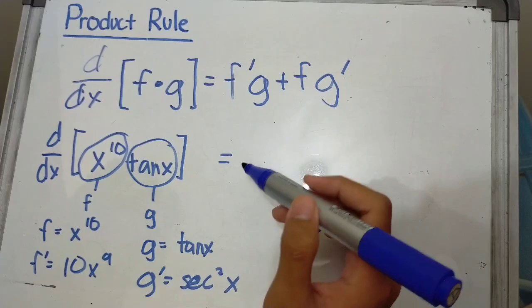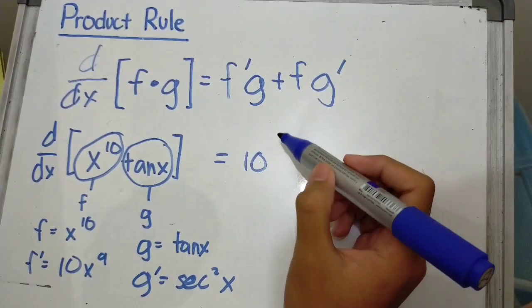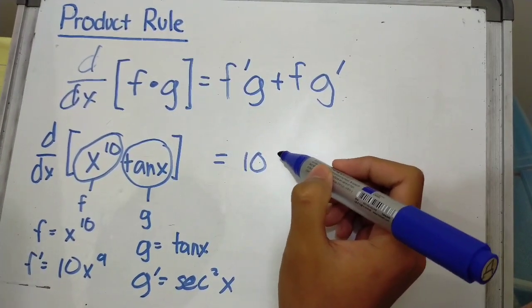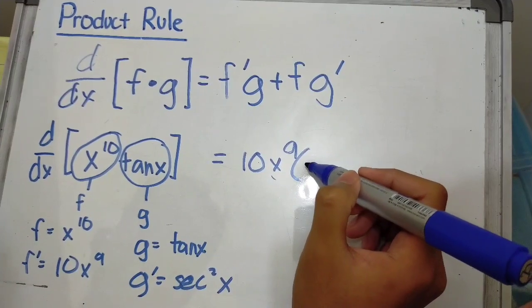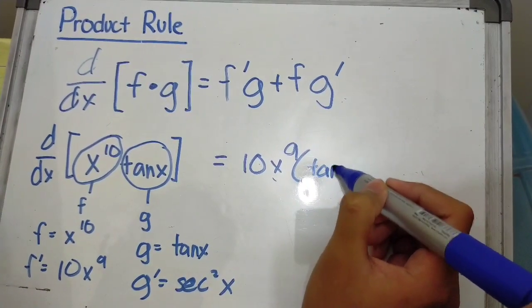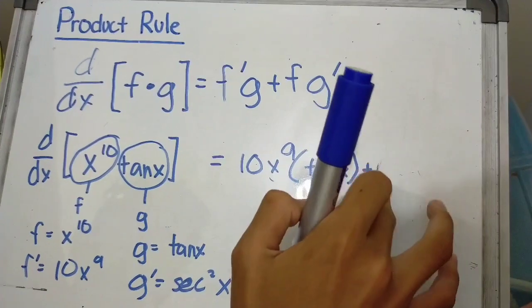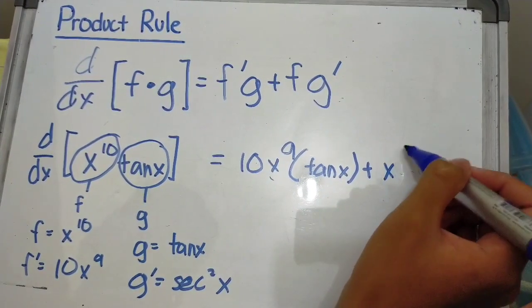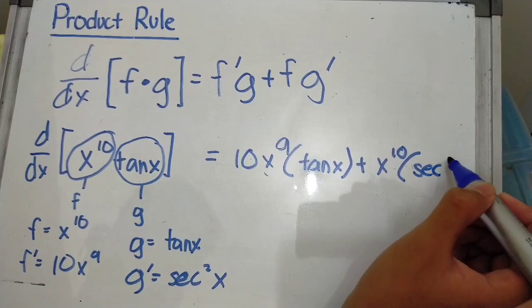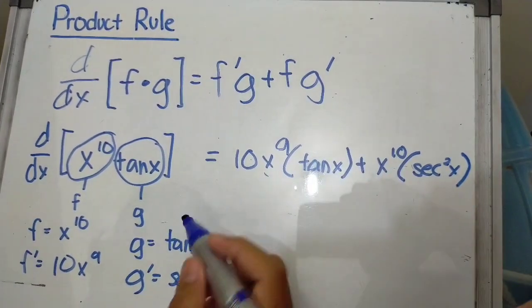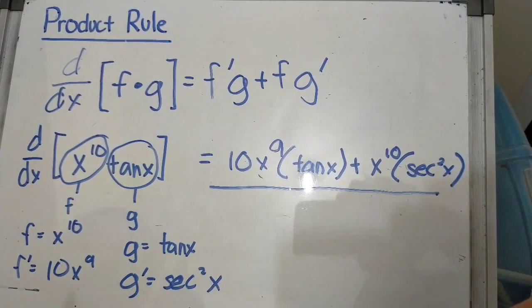Using the formula: 10x^9 times g, which is tan x, plus f, which is x^10, times sec²x. And there you go, that's the first derivative of our first example.